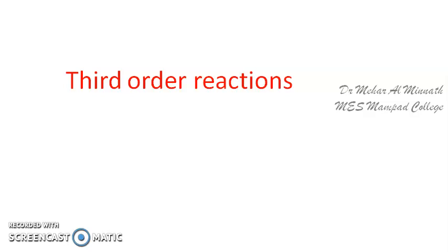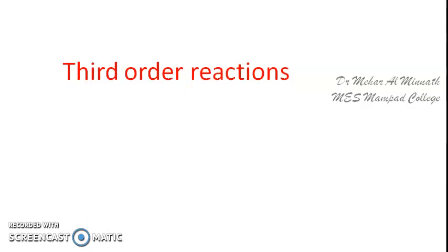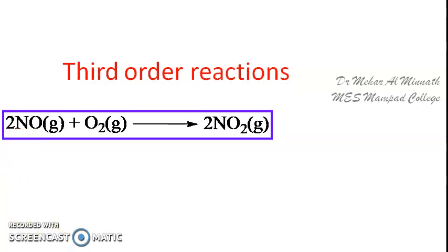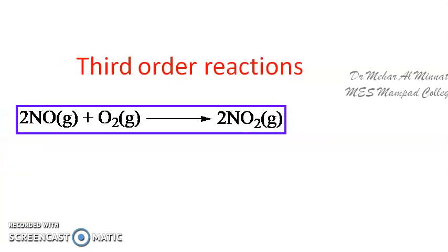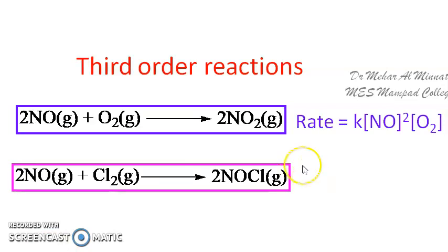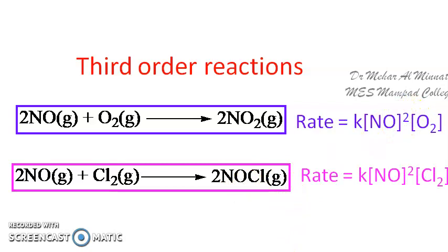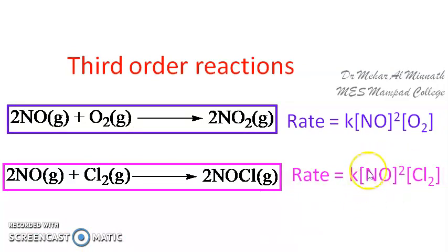Here are one or two examples of third order reactions. The formation of NO₂ gas from nitric oxide and oxygen is a third order reaction; the rate expression depends on the concentrations of NO and O₂, and the sum of the powers is 3. Similarly, the formation of NOCl is also a third order reaction, where the rate law contains concentration terms for both NO and Cl₂ and the sum of the powers in the concentration terms is 3.